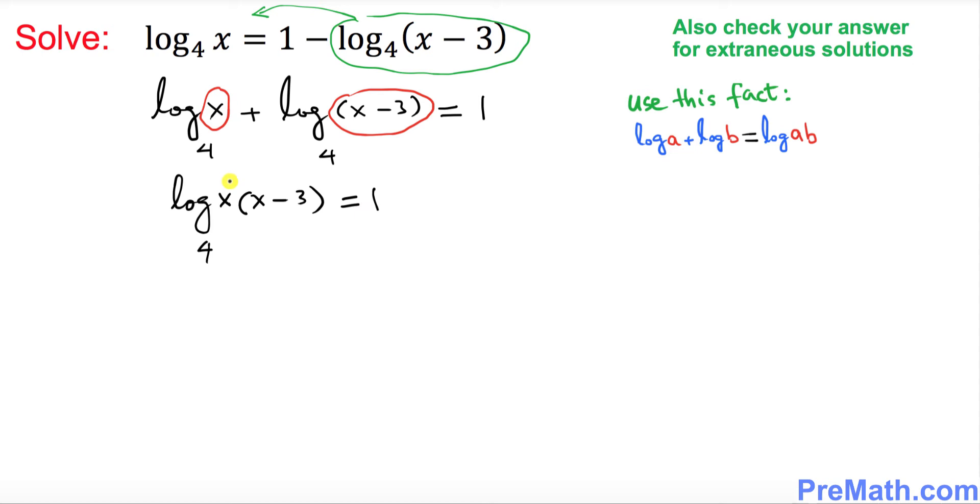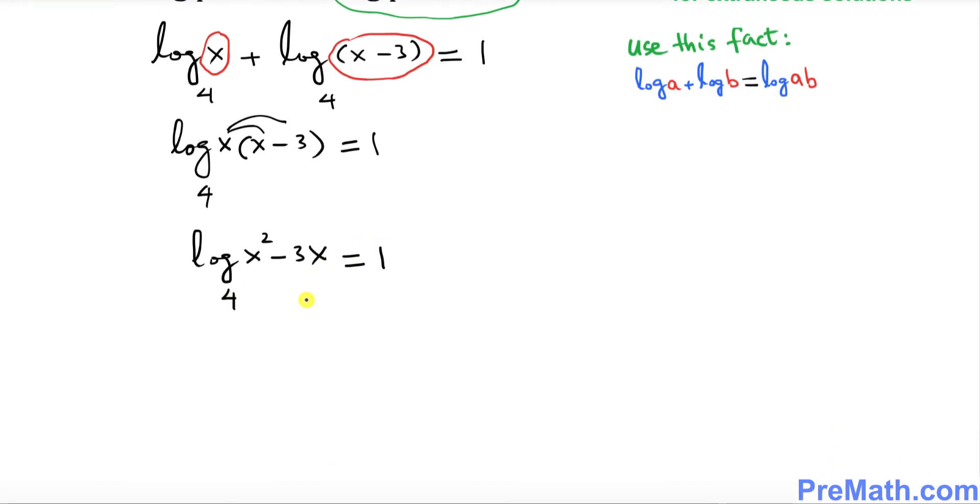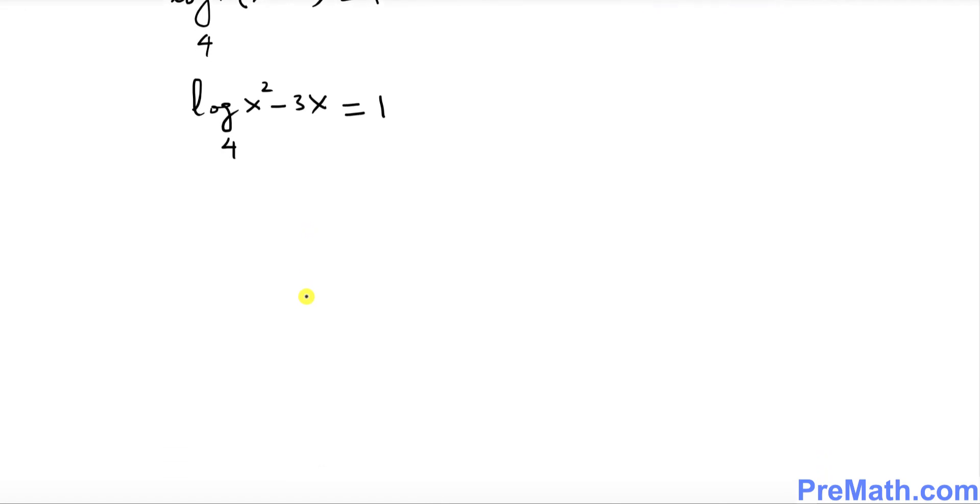So that's going to become log of x times x minus 3, base 4, equals to 1. Let's go ahead and simply distribute this part, so this is going to become log of x squared minus 3x with a base 4 equals to 1.